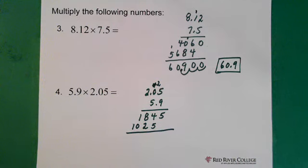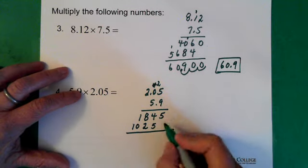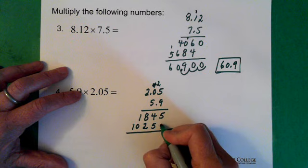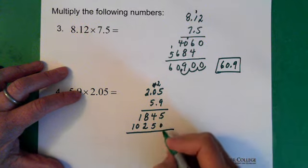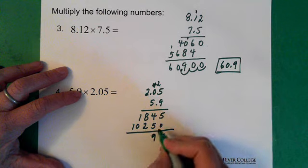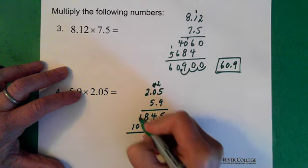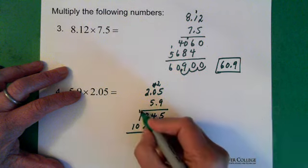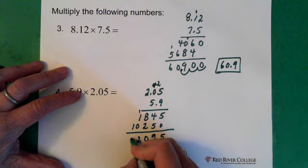Okay. So now we add these up. We know there's a 0 here. So we have 5 here. That adds up to a 9. This is 10. So 0 here and a 1 up here. We end up with 2 here and a 1.